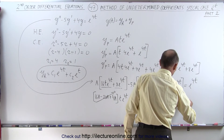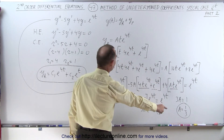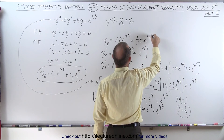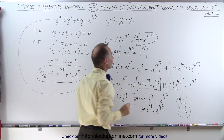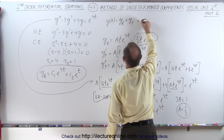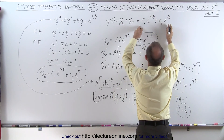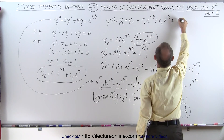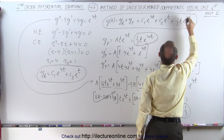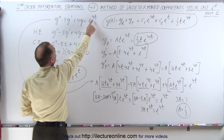So 3A equals 1, which means A equals 1/3. I have now determined the undetermined coefficient — it equals one-third. So the particular solution is (1/3)·t·e^(4t). All I have to do now is add that to the homogeneous part of the solution.